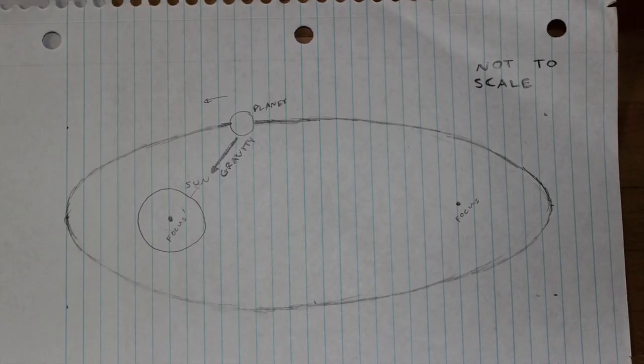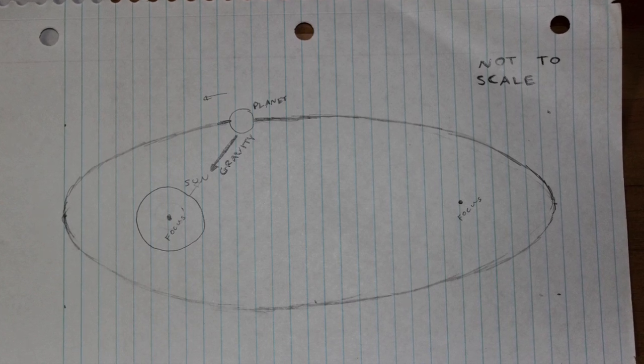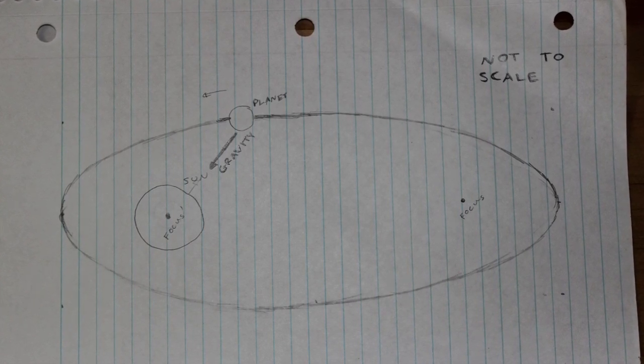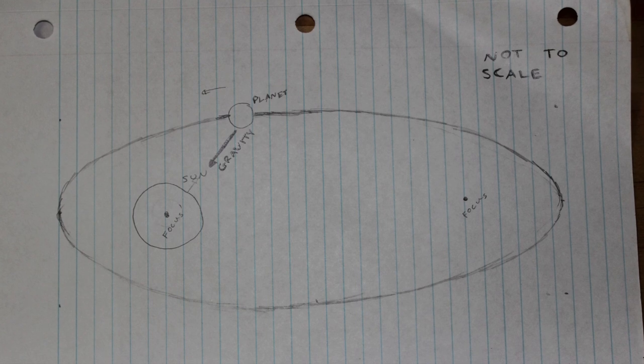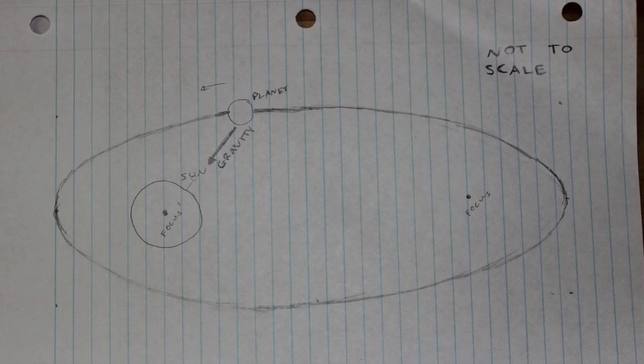Alright, so we have a system of a planet orbiting the sun in an elliptical fashion, and we know that one force acting on the system is gravity, the force of attraction between the two bodies.